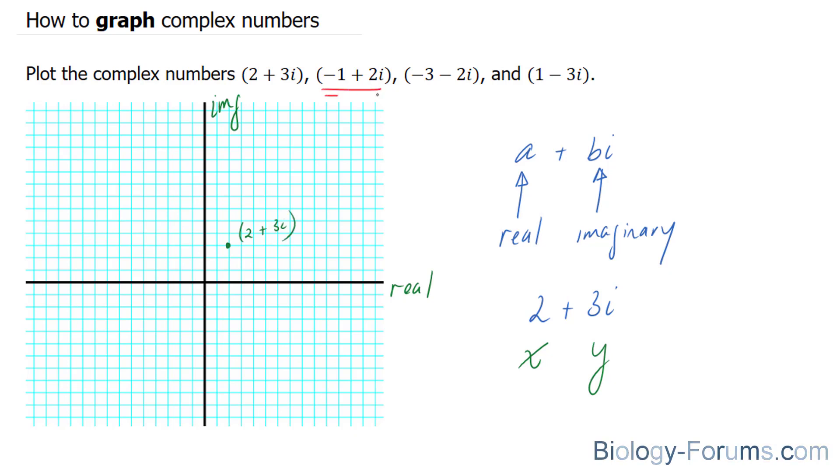For the next point, we have negative 1 as our real and 2i as our imaginary. So in this case, you'd move one to the left and two upwards. And this would designate negative 1 plus 2i.